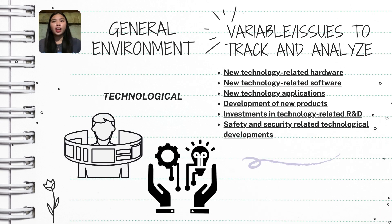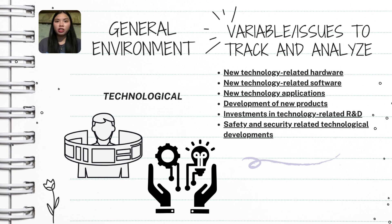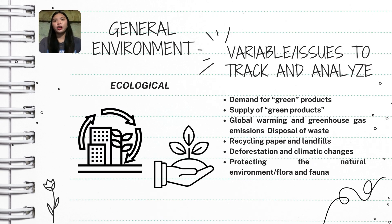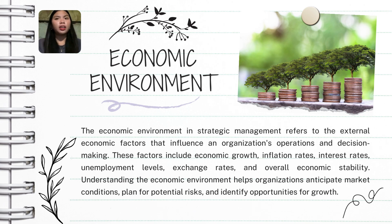Under Social-Cultural continued: psychographic changes such as lifestyle of the baby boomer generation and lifestyles of generations X and Y. Cultural changes including multiculturalism. Other factors include spread of disease, work-life balance, terrorism or religion, and nationalism. Under Technological: new technology related hardware, software, and applications, development of new products, investments in technology-related R&D, and safety and security-related technological developments. Under Ecological: demand for green products, supply of green products, global warming and greenhouse gas emissions, disposal of waste, recycling, deforestation and climatic changes, and protecting the natural environment or flora and fauna.